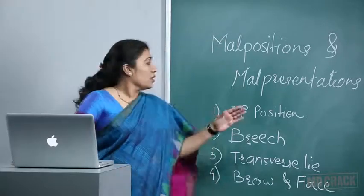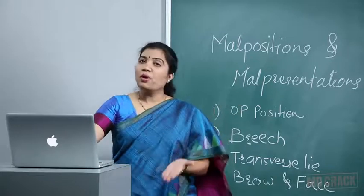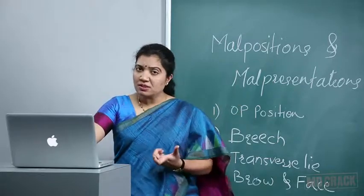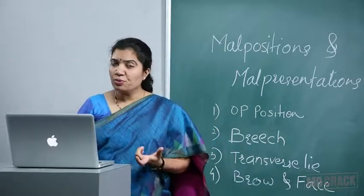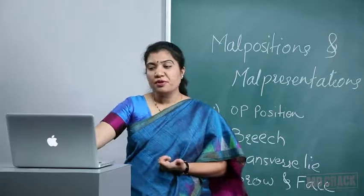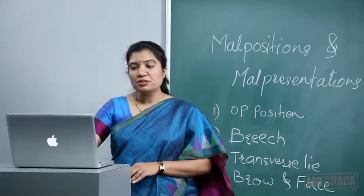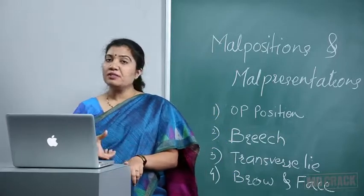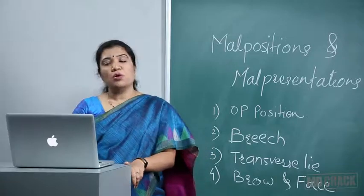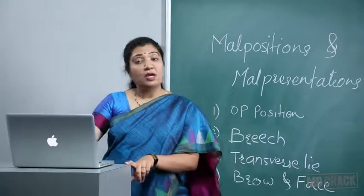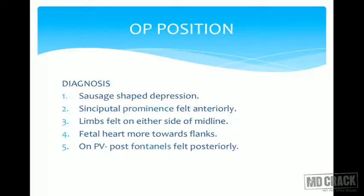Occiput posterior position is most commonly seen in either anthropoid pelvis or android pelvis. The cause is also that the head is little deflexed, and because of that the occiput posterior position is favored. Cephalopelvic disproportion can be another cause, and high inclination of the pelvis where there is sacralization of the lumbar vertebra can also lead to occiput posterior position. These are very important causes — MCQs have been asked on this.